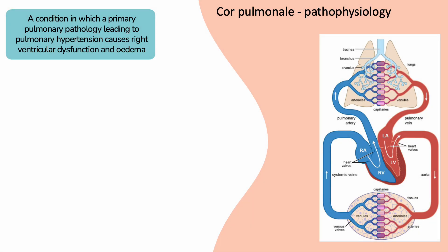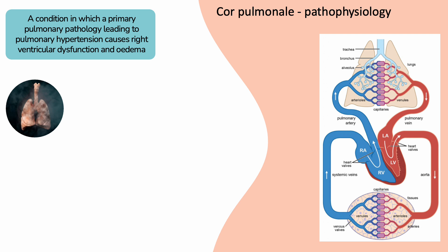Cor pulmonale is a condition characterized by right-sided heart failure, resulting from a primary chronic pulmonary disease. It develops when the pulmonary arteries undergo compensatory changes with increased pressure due to underlying lung diseases such as chronic obstructive pulmonary disease, known in short as COPD.